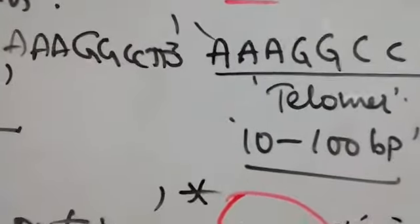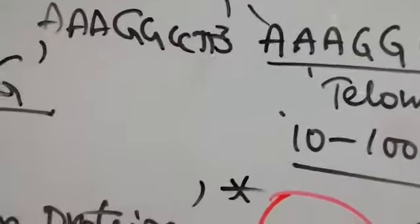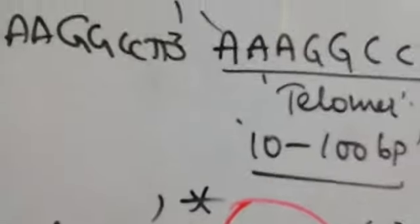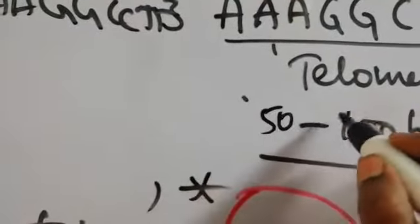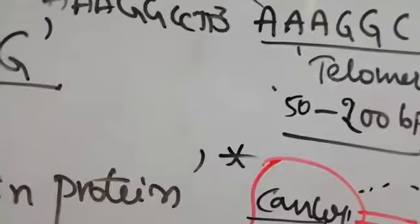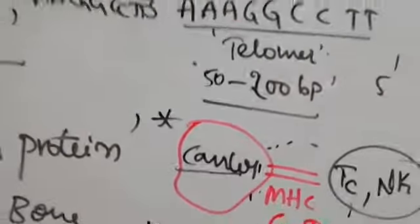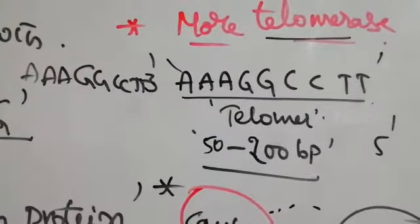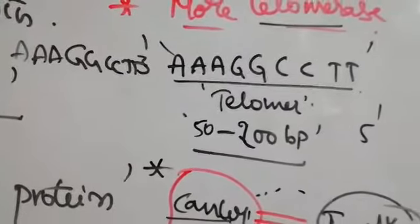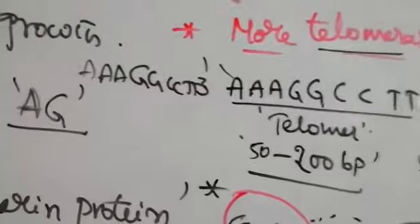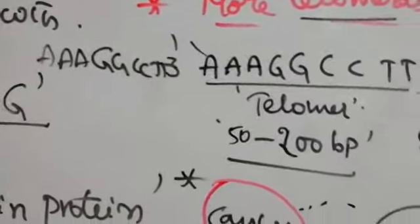These repeated base pairs are present in 50 to 200 or more base pairs. When telomerase is more present during cell division, in normal cells the telomerase amount decreases as the cell reaches death.